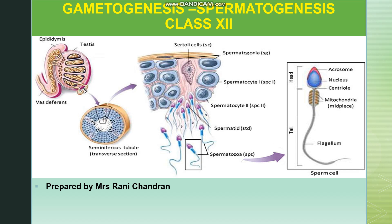Gametogenesis in males is known as spermatogenesis. Genesis means formation — formation of the sperms is what is known as spermatogenesis. This spermatogenesis takes place in the testis. The testis contains seminiferous tubules, which are the structural and functional unit of the testis. In a cross section of the testis, on the inner side of the seminiferous tubules, you can see two types of cells: spermatogonia and Sertoli cells. Spermatogonia are the male germ cells that give rise to sperms, and Sertoli cells nourish the male gamete.